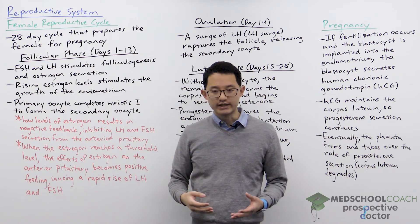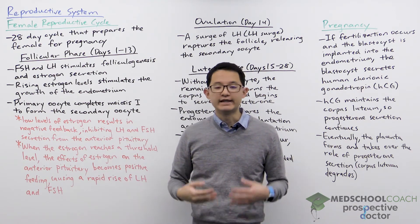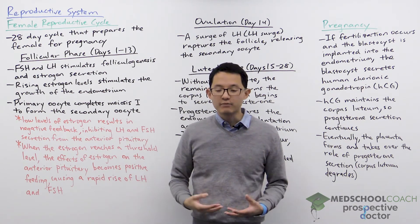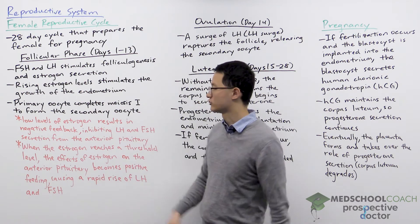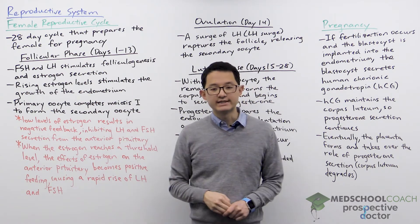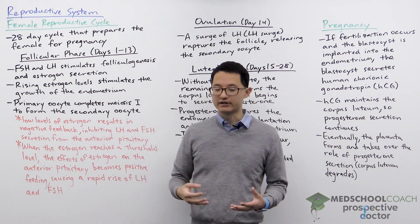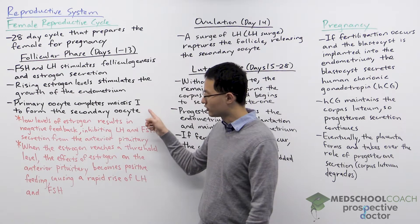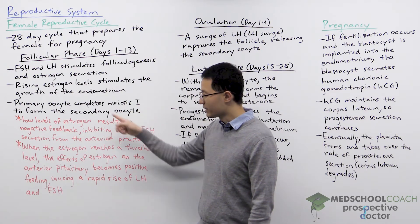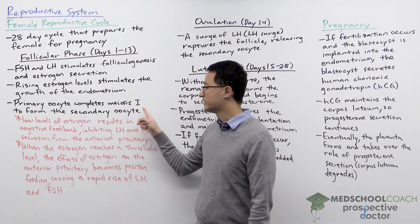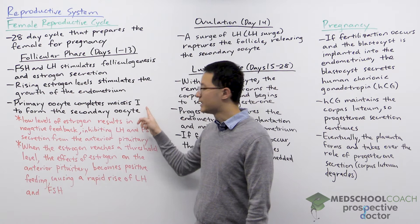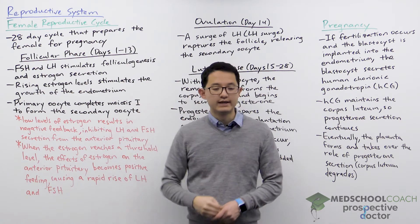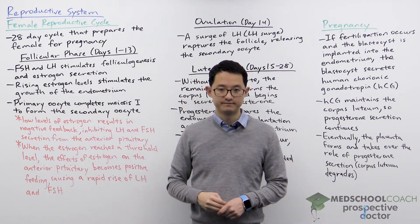Estrogen has a function in developing the endometrium. As its levels rise, you can see on this diagram how the endometrium levels will start to increase over time. In addition, as the follicle is developing, the primary oocyte within the follicle is going to complete meiosis 1 to form the secondary oocyte.